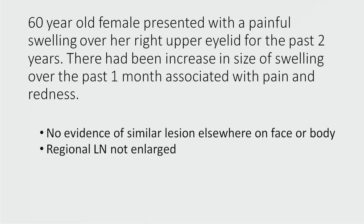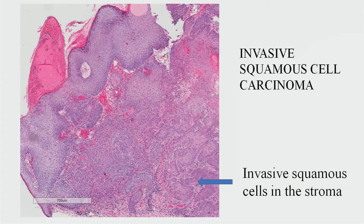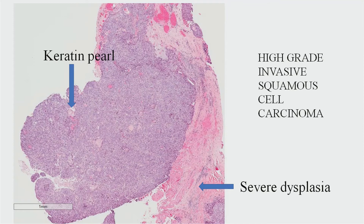A 60-year-old female presented with a painful swelling over her right upper eyelid for the past two years, with increase in size over the past one month associated with pain and redness. No similar lesion was found elsewhere, and regional lymph nodes were not enlarged. On examination, a 15 x 3 mm beaded lesion was noted over the right upper eyelid with irregular rolled edges, violaceous hue, trichiasis, and telangiectatic vessels. Histopathology was suggestive of invasive squamous cell carcinoma, with invasive squamous cells visible in the stroma, keratin pearls, and severe dysplasia.